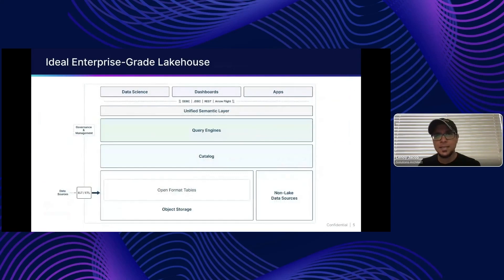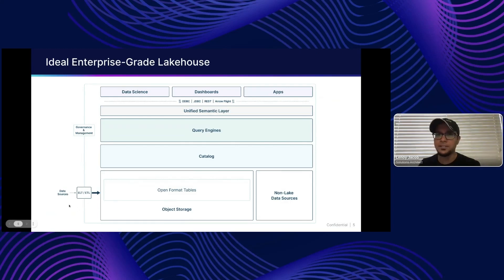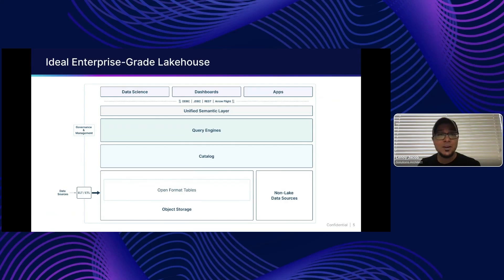A data lakehouse has many different pieces. At the bottom you have your object storage — S3, Azure Storage, or Google Cloud Storage. You want your Parquet files, ORC files, and Avro files that have landed in the data lake to be treated as tables, which is where open table formats like Iceberg come in — they allow you to identify different groups of files as tables. You'll have lots of tables, so you need a catalog to track and discover them across multiple tools.